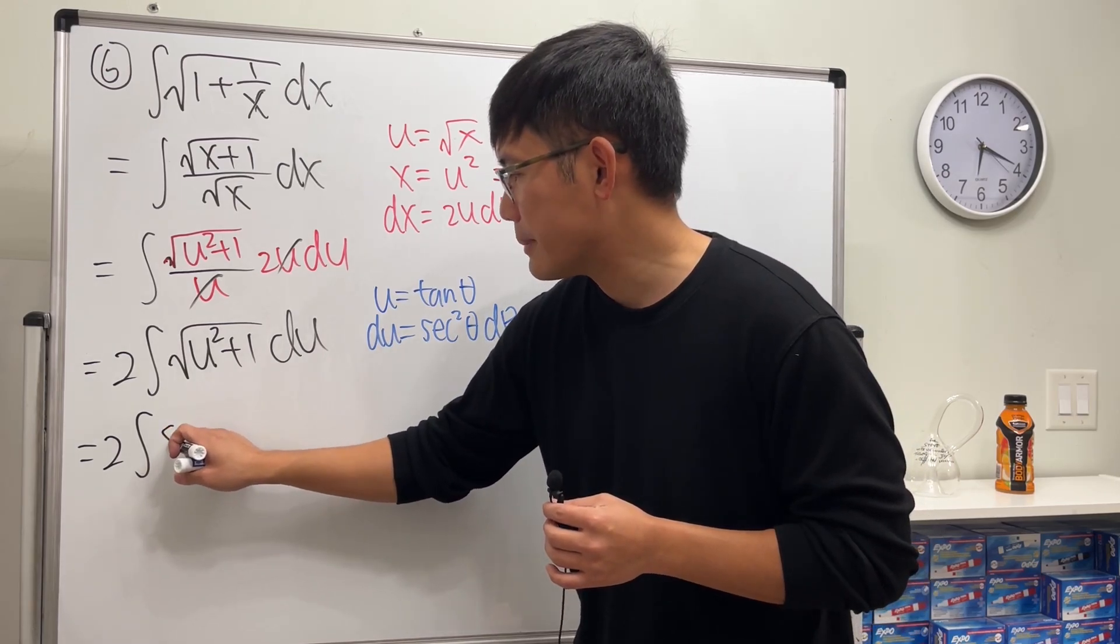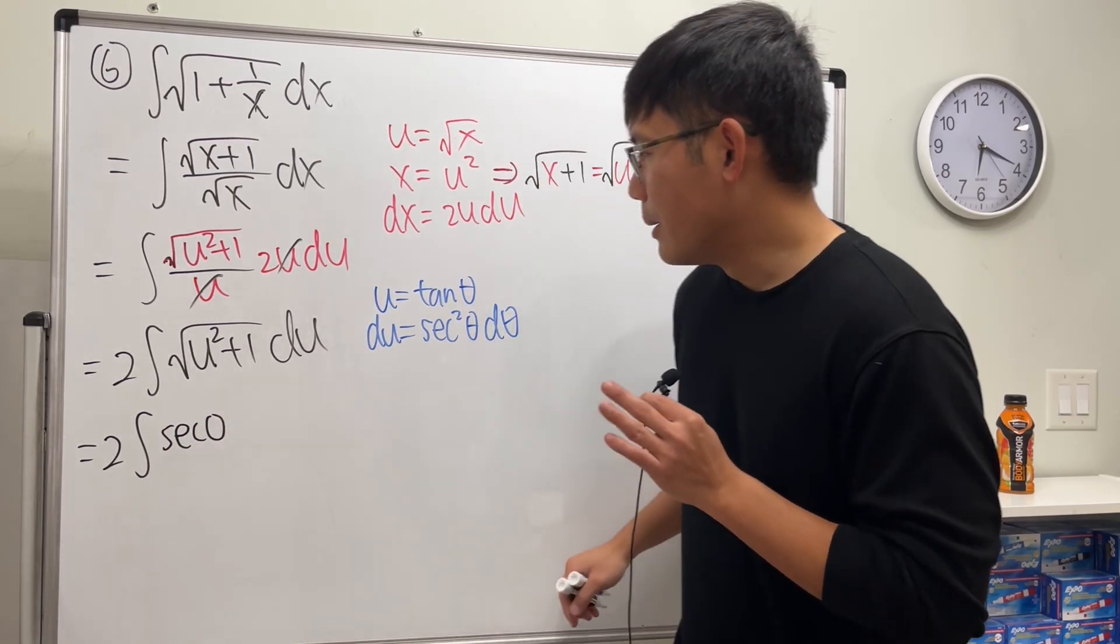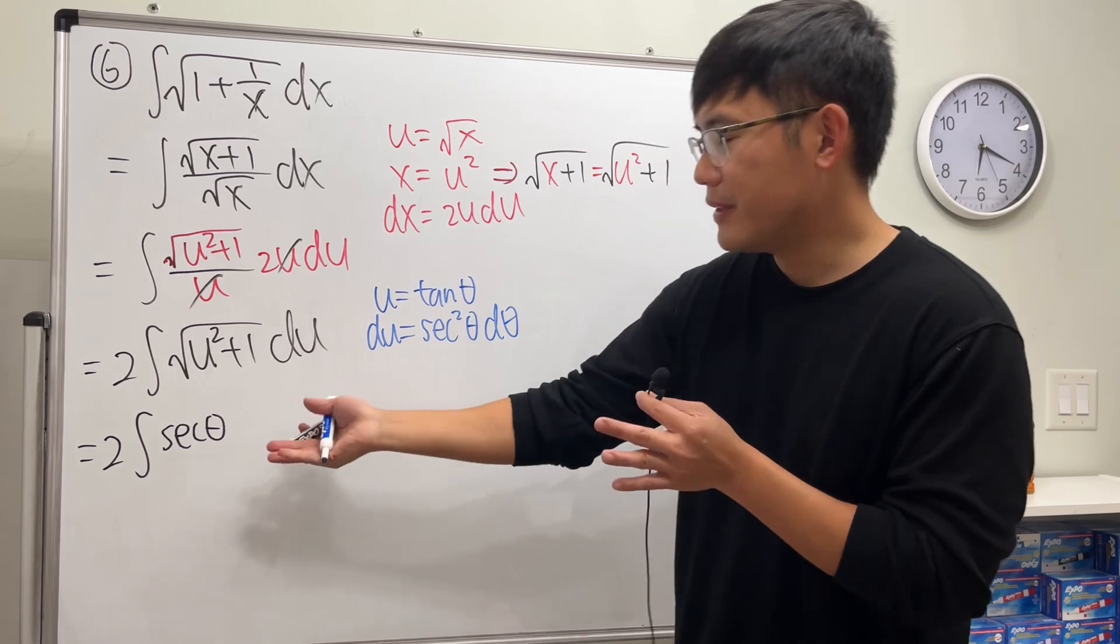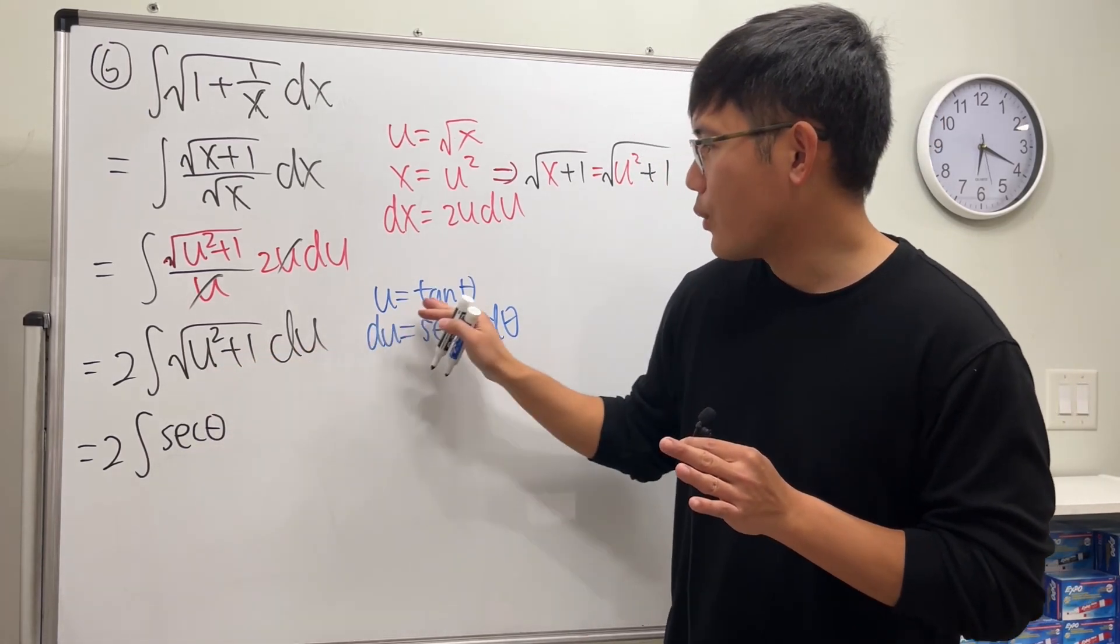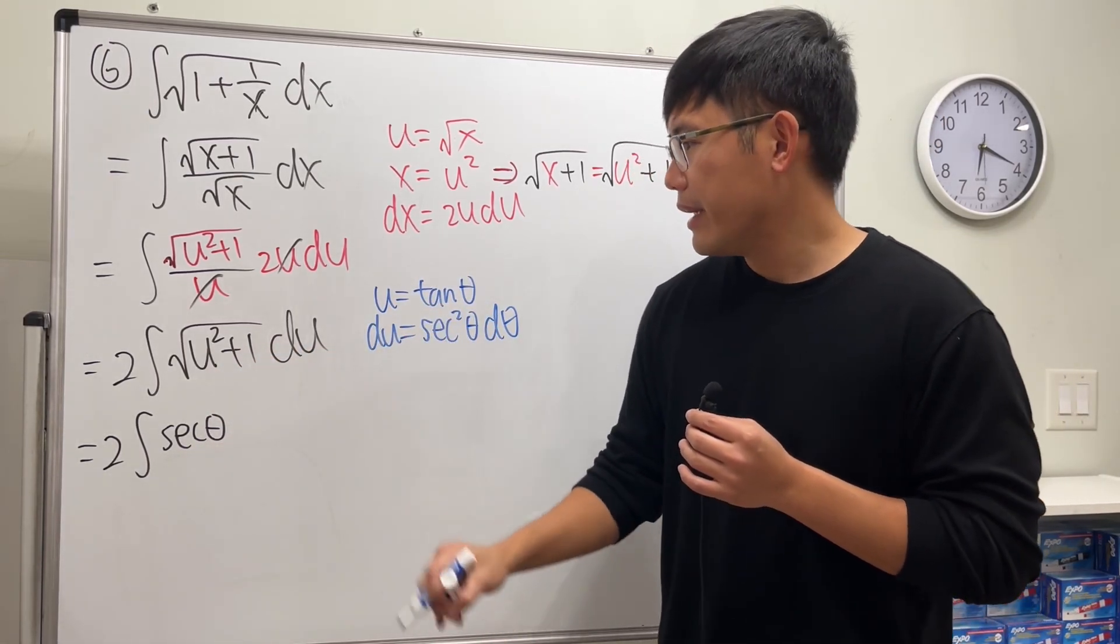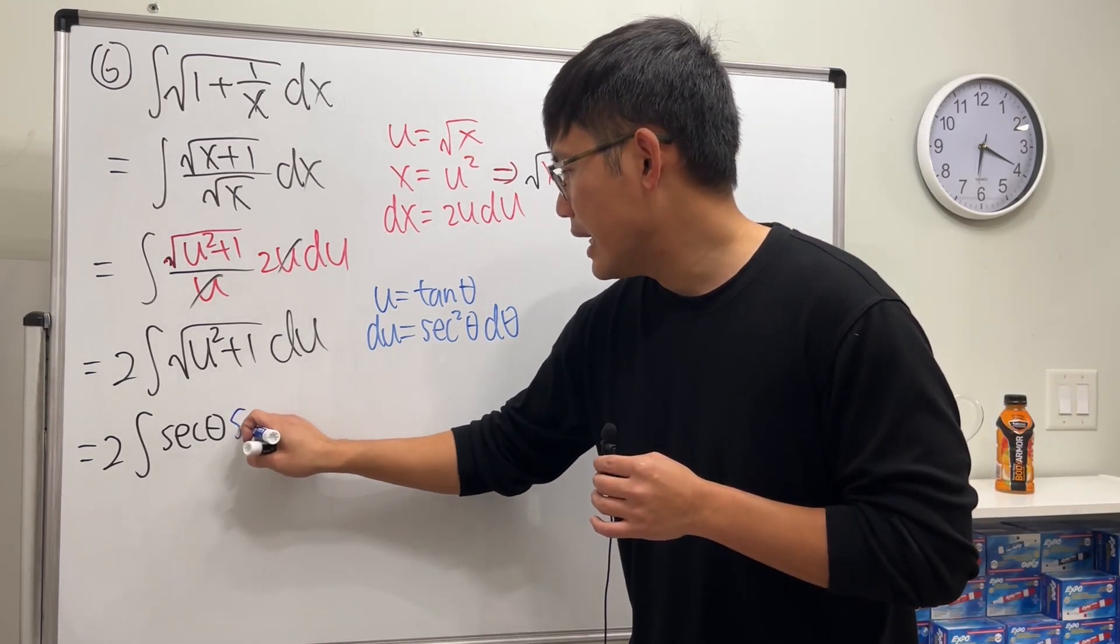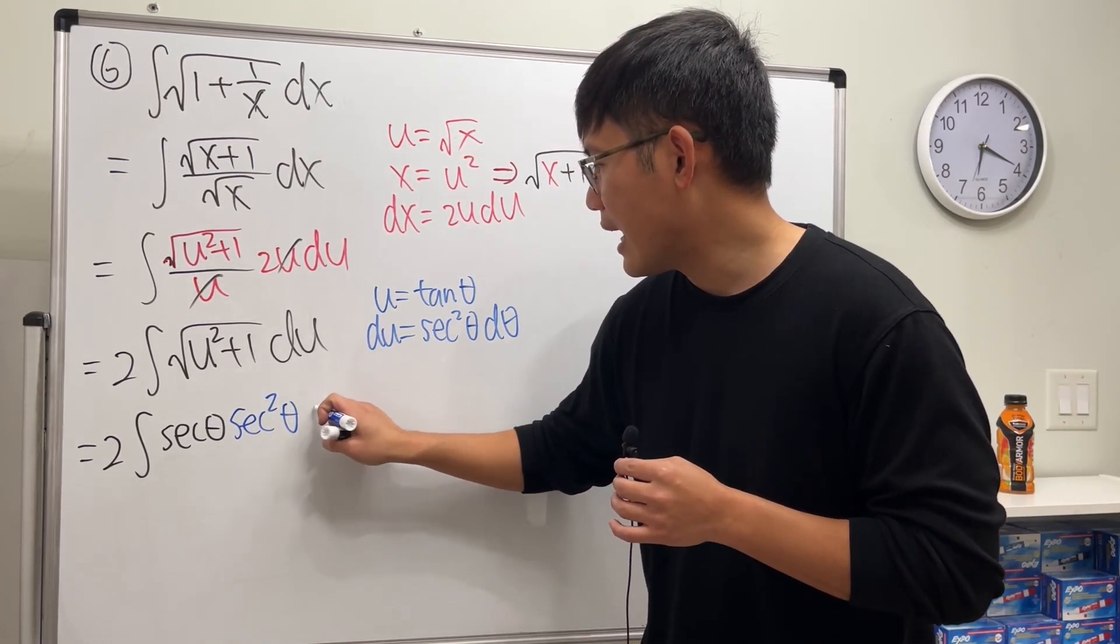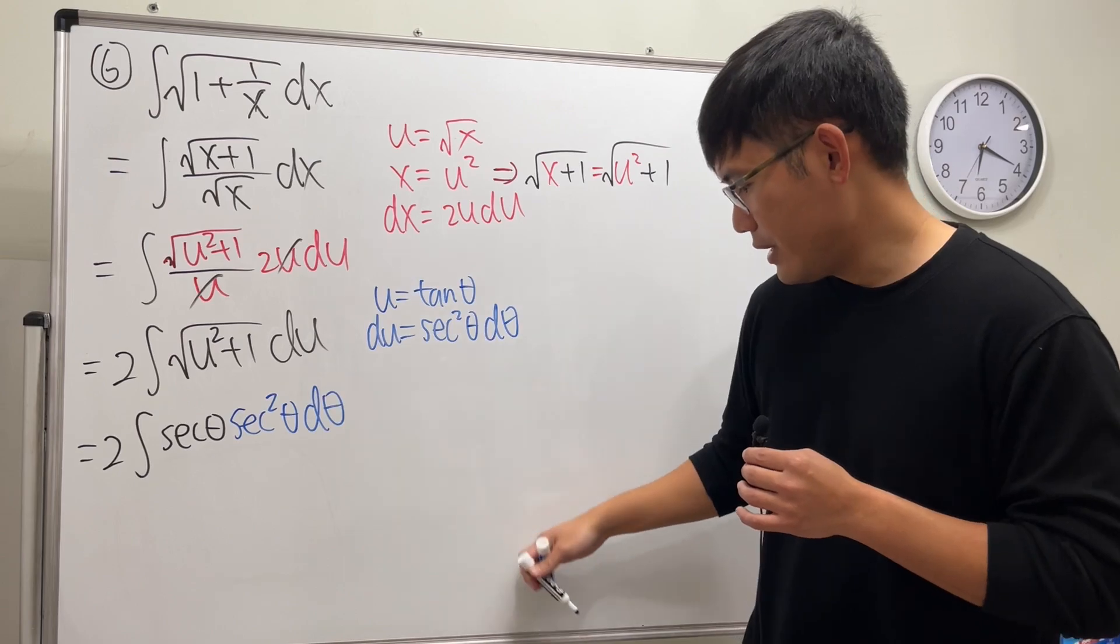And again, we don't need to worry about the absolute value. We are just purely doing this for the definite integral. So for this part, we'll give us secant theta. And then du is secant squared theta d theta. Very nice.